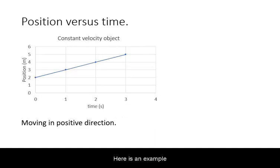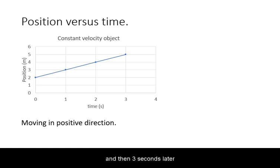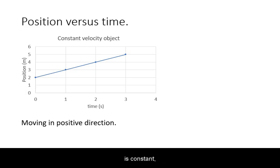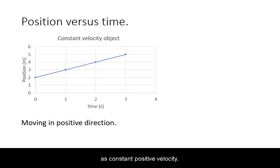Here is an example of an object starting at 2 meters, and then 3 seconds later it is at 5 meters. Because the rate of change of position, represented by the slope of this graph, is constant, we describe the motion of this as constant positive velocity.